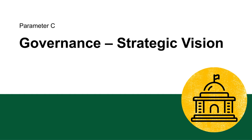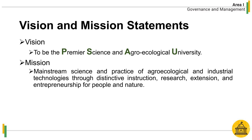Parameter C: Governance — Strategic Vision. The university is mandated to primarily provide advanced education, higher technological and professional instruction, and training in the fields of agriculture, arts and sciences, teacher education, industrial technology, engineering, information technology, business management and accountancy, non-traditional courses, and other relevant fields of study. It shall also undertake research, extension services, and production activities in support of the development of the province of Pampanga, and provide progressive leadership in its areas of specialization.